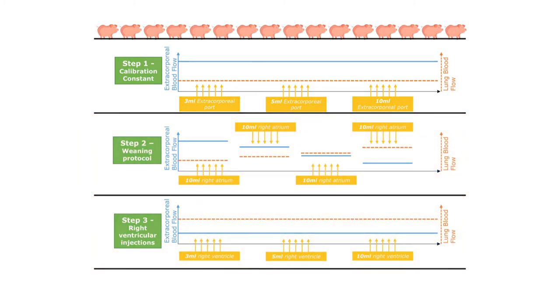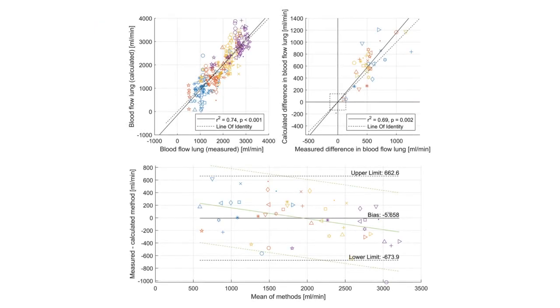Compared with ultrasound measured blood flow, the team found that this method allowed them to calculate the blood flow with a low bias of almost 0 liters per minute and limits of agreement of roughly 0.6 liters per minute, which resulted in a percentage error of approximately 30%.